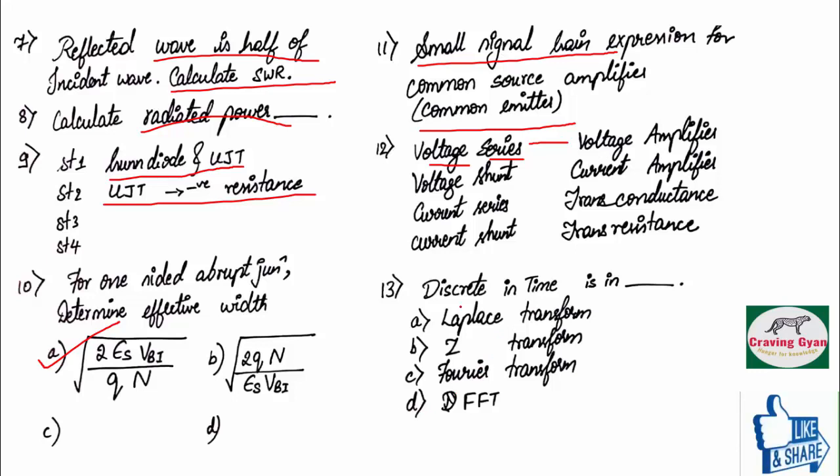We know in the case of fast Fourier transforms, we are having two methods. One is DITFFT and DAFFFT. Hence, the option is, option number 4 is correct.